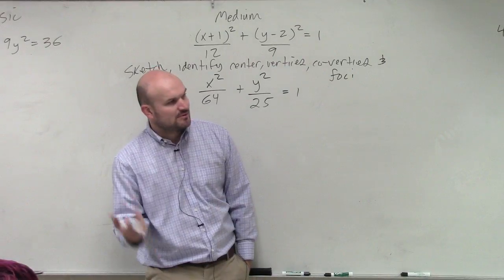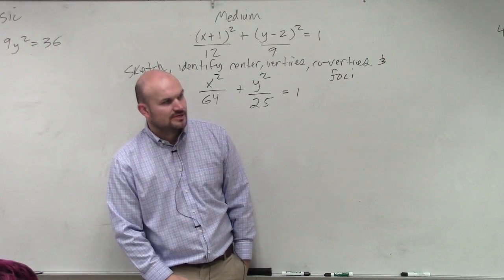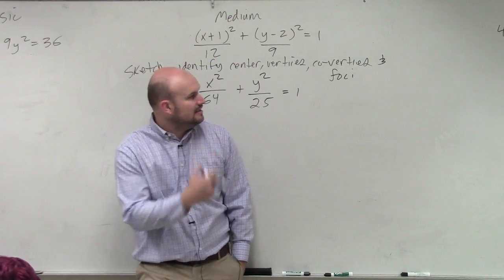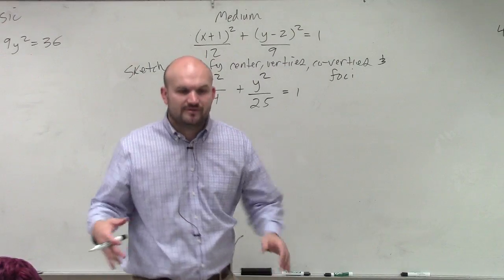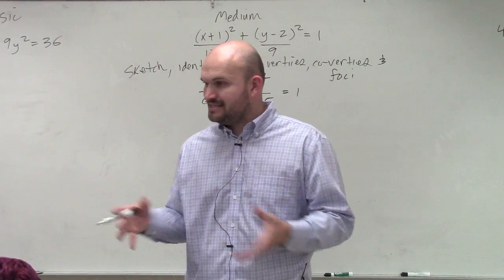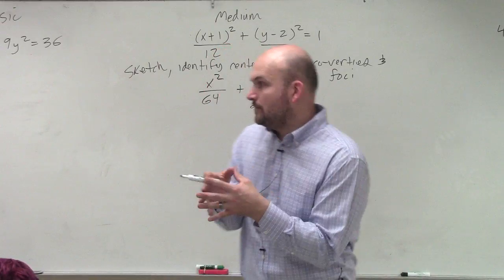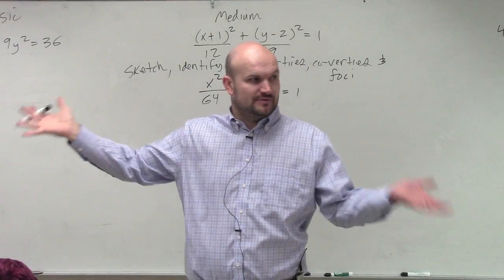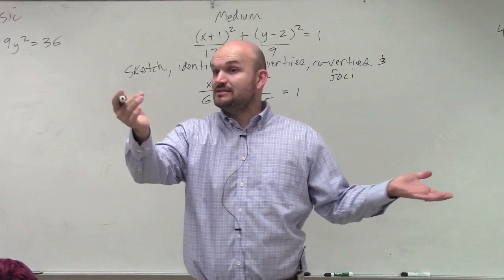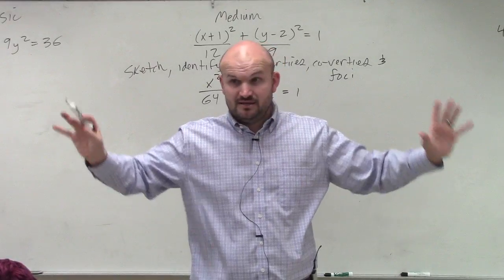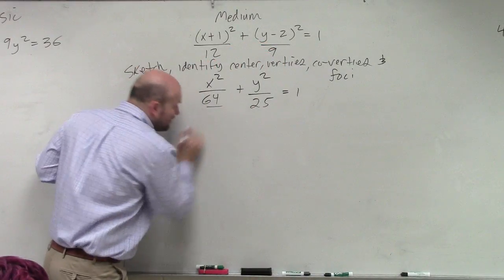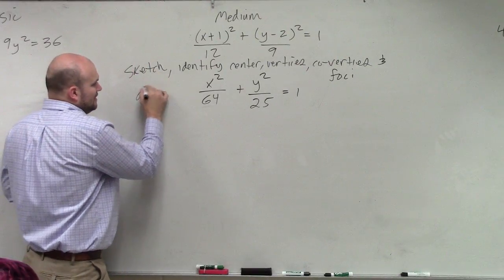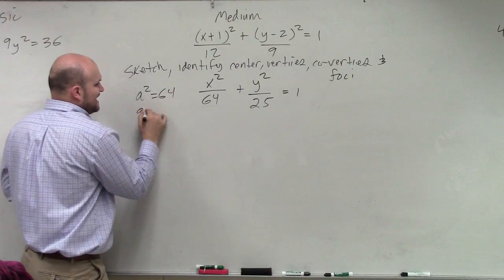That's a lot of stuff, so we'll start with the basic one. First thing I want you guys to understand is to find A, because finding A is the easiest. Based on the formula, A is either under the x or under the y. How do we differentiate? Well, A is always larger than B. Always. So that means A squared is always larger than B squared. Does everybody follow me? So A squared equals 64. That means A in this case is 8.